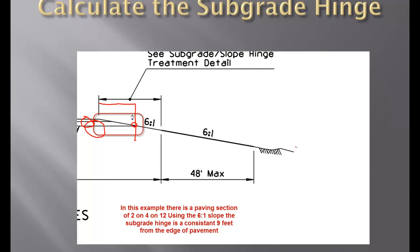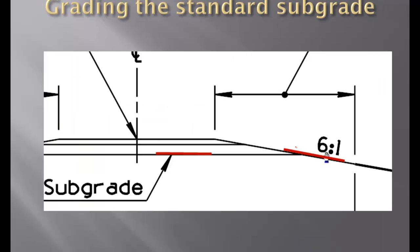Let's talk about how we're going to go about actually grading the subgrade on this job. Now, what I've got in this slide is basically the representation of two grader blades. There's one here, and then there's one over here to the right on the slope.